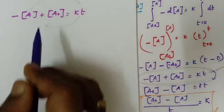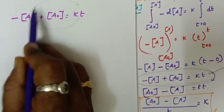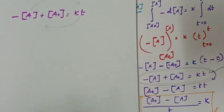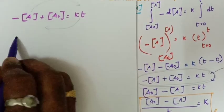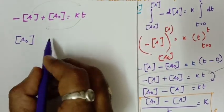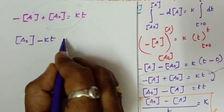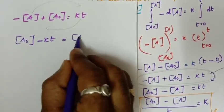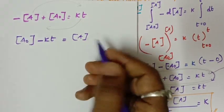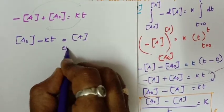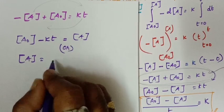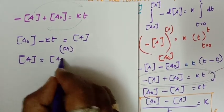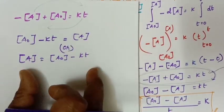If we rearrange this equation, we get concentration of A equals A₀ minus kt. This is the integrated rate law for zero order reaction. The equation is in the form of a straight line.